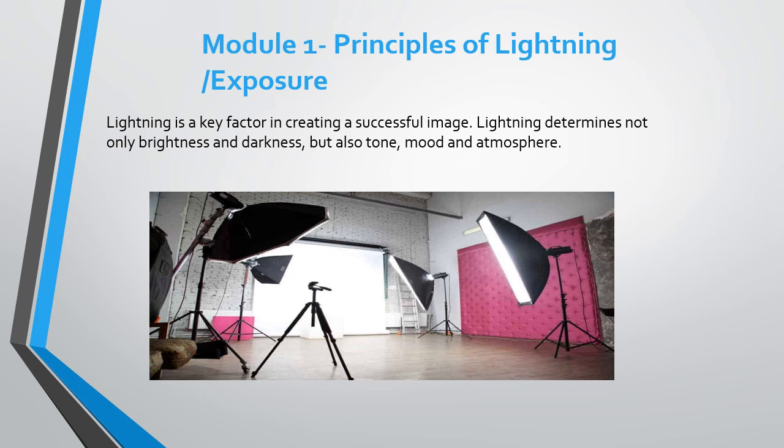Module one is Principles of Lighting and Exposure. Lighting is the main factor in creating successful images — it determines not only brightness and darkness but also the tone, mood, and atmosphere of the picture. Therefore it is necessary to control and manipulate light correctly in order to get the best texture, vibrancy of colors, and luminosity of your subjects.